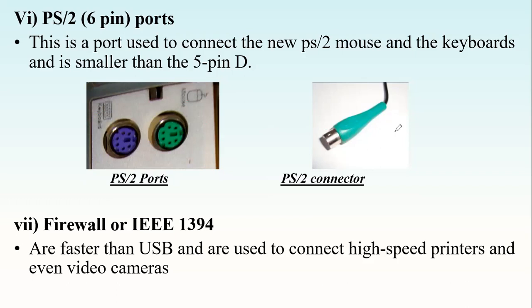Number seven is FireWire, also called IEEE-1394. These are faster than USB and are used to connect high-speed printers and even video cameras.